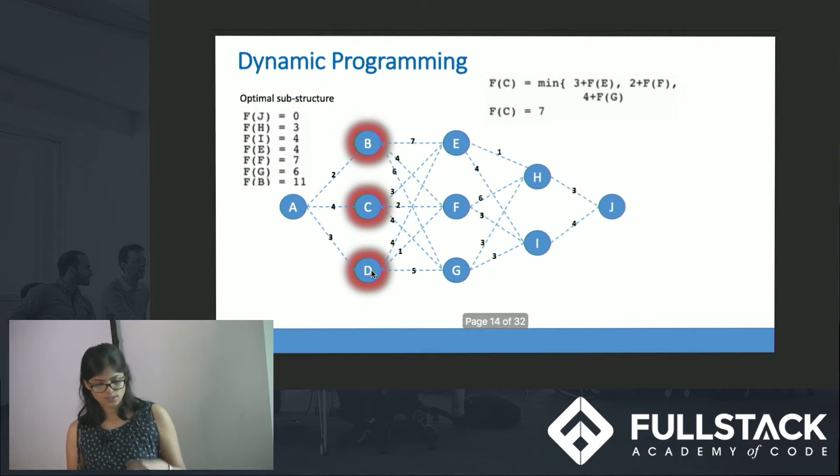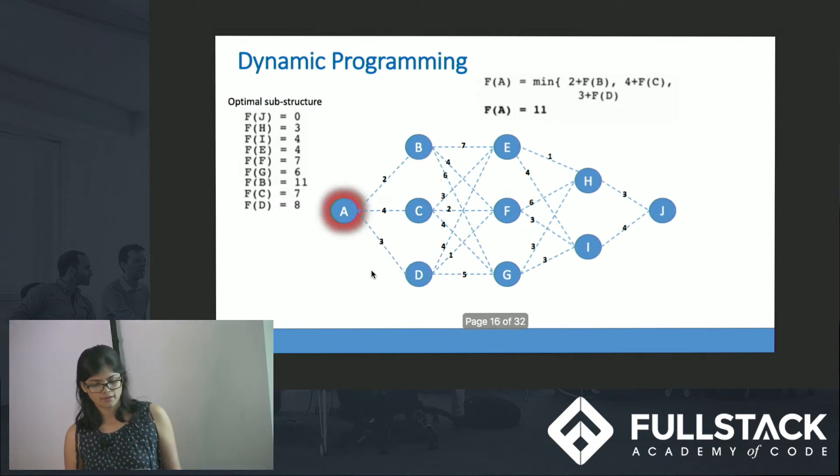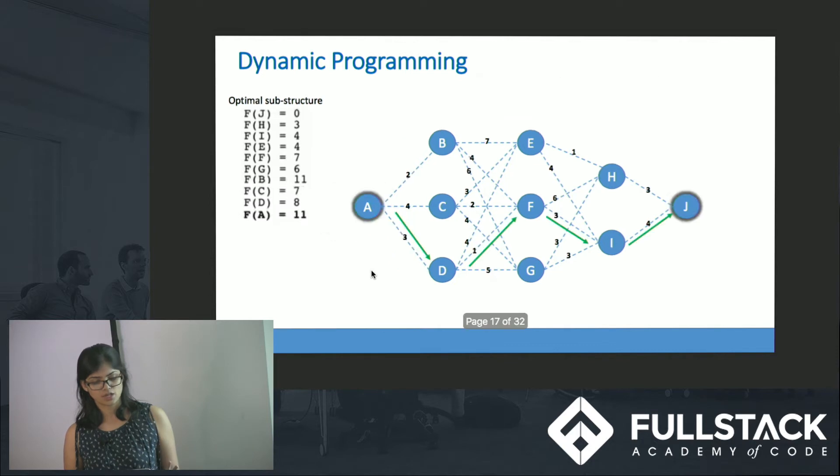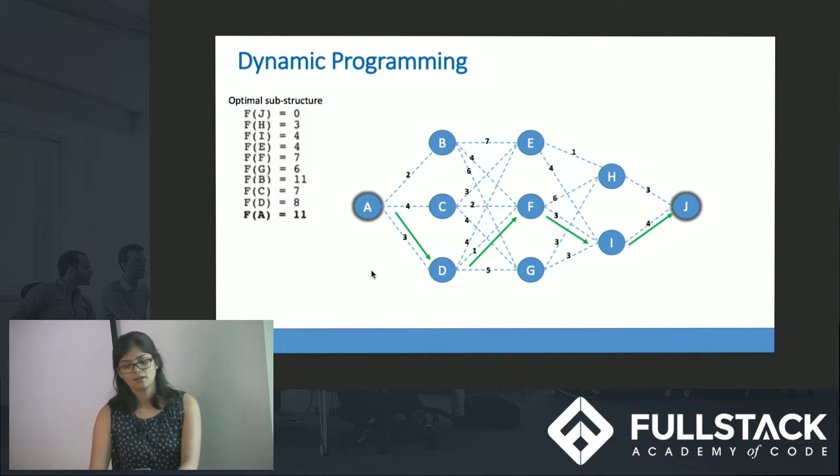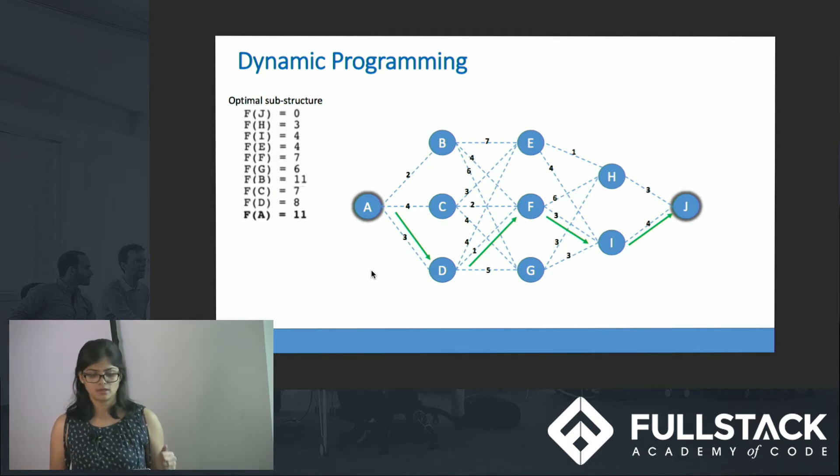Likewise we compute for other nodes and thus a shortest path from A to J is from A to D, D to F, F to I and I to J, which is of length 11, which is smaller than what greedy algorithm showed us.